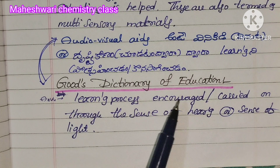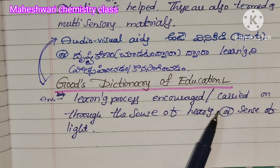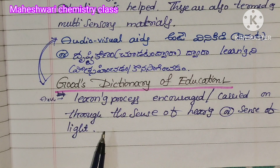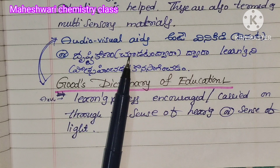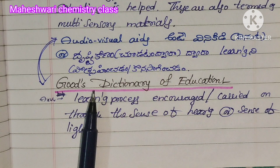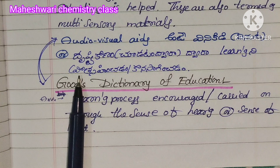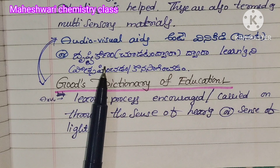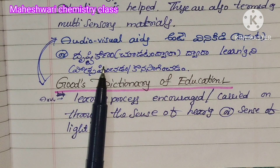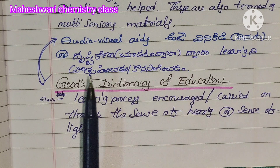Next, Good's Dictionary of Education defines audio-visual aids as: learning processes encouraged or carried on through the senses of hearing or senses of sight. Audio means sound-based, and visual means sight-based. This is Good's Dictionary of Education definition.